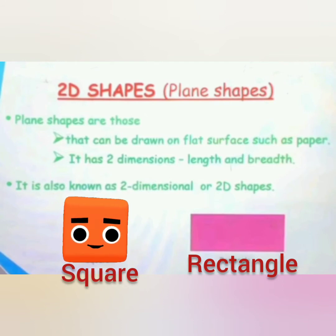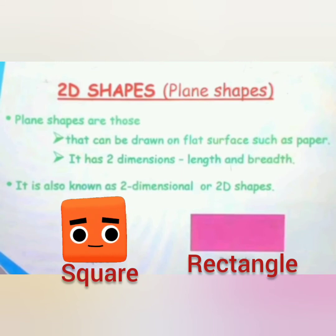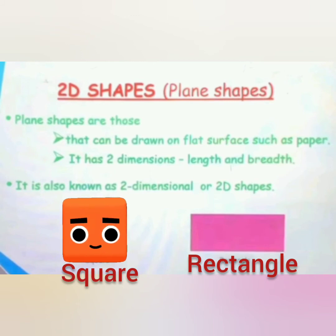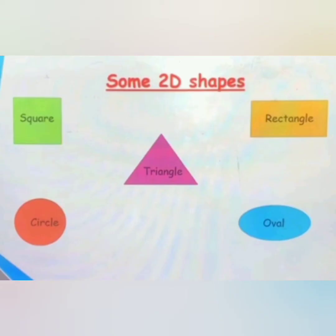For example, a square or a rectangle are 2D shapes. Here you can see some examples of 2D shapes: a square, circle, triangle, rectangle, and oval.